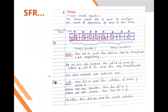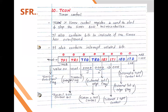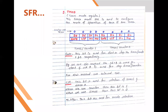Two very important special function registers for timer programming in Unit 4 are the TMOD (timer mode) register and the TCON (timer control) register. These two registers are required when doing timer programming. The TMOD register is the timer mode register.